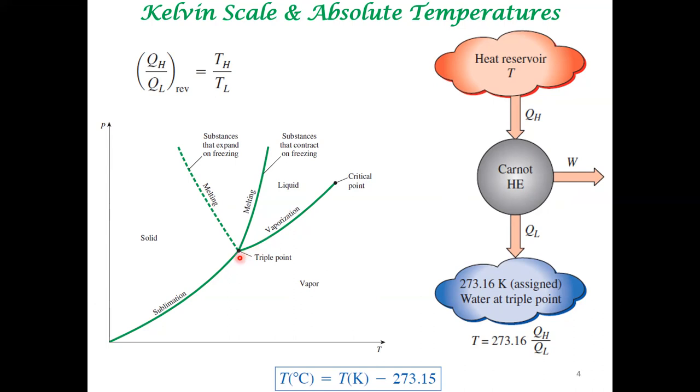Go and look at what is the value of the triple point in the Celsius scale. Once you know the ratio and once you know one absolute value of that of triple point, this is arbitrary. The value assigned to the triple point is arbitrary. Earlier in Celsius scale, we had assigned a value very close to zero for the triple point of water.